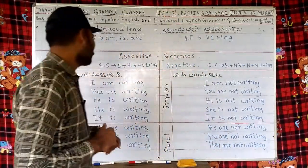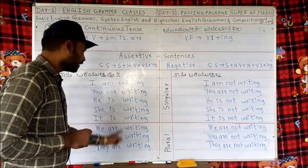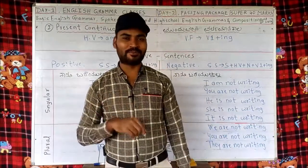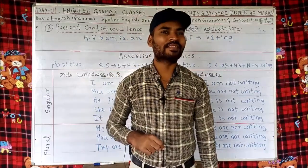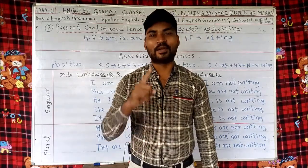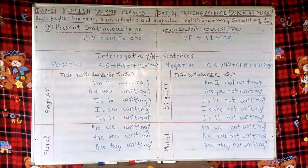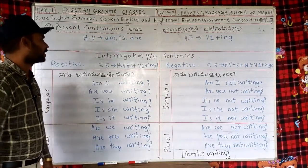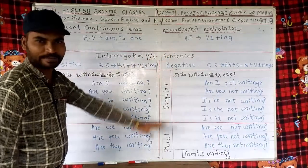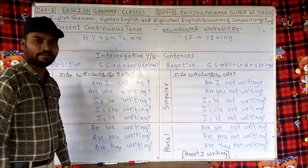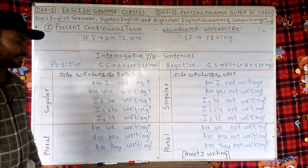You may observe the difference between positive sentences and negative sentences — just one difference: if you put 'not', then the same sentences become negative sentences. Making positive to negative is very easy, but you need some practice. Now let's go to the next type of sentences — interrogative yes or no type. Tense number 2, present continuous tense, Mundu Varida Vartamana Kala. Helping verbs are the same: am, is, are. Verb form is also the same: V1 plus ING.